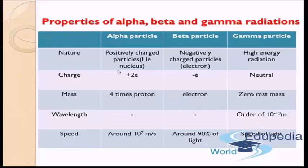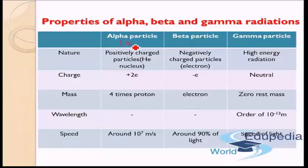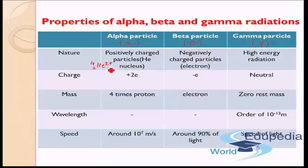Alpha particles are represented by the symbol alpha, beta particles by the symbol beta, and gamma particles as gamma. Now what an alpha particle is — it is basically a helium nucleus. Helium is He-2-4. From this, if you remove two electrons, what you get is He-2-4 with a 2+ charge, because the two electrons are removed. Therefore alpha particles are positively charged particles — they are helium nuclei with two electrons removed.